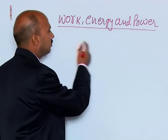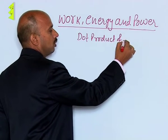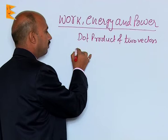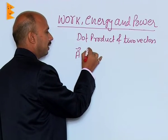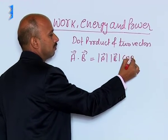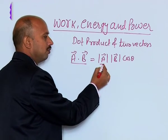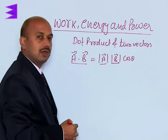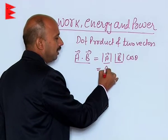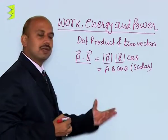Let us take the first topic of this chapter, that is the dot product of two vectors. The dot product of vector A and vector B is written as the magnitude of vector A, magnitude of vector B, and cos theta. So the dot product of two vectors is equal to the product of their magnitudes and the cosine of the smaller angle between them — written as AB cosθ. This is a scalar quantity, so the dot product of two vectors is a scalar.